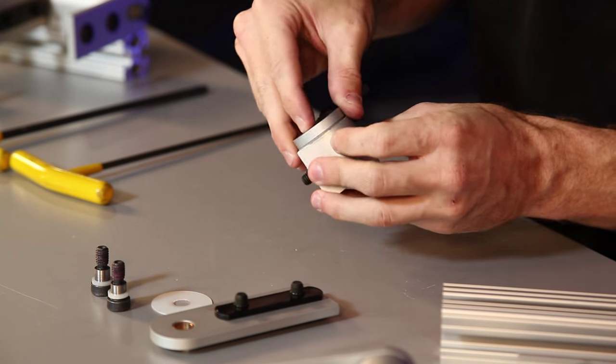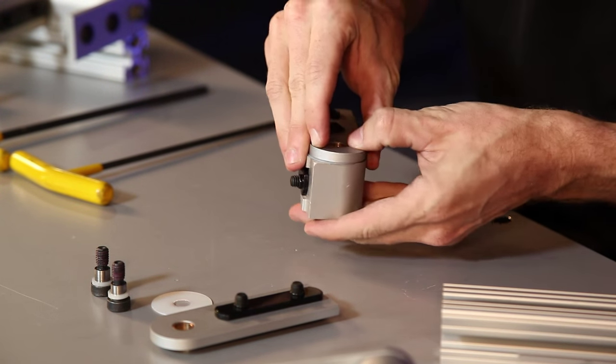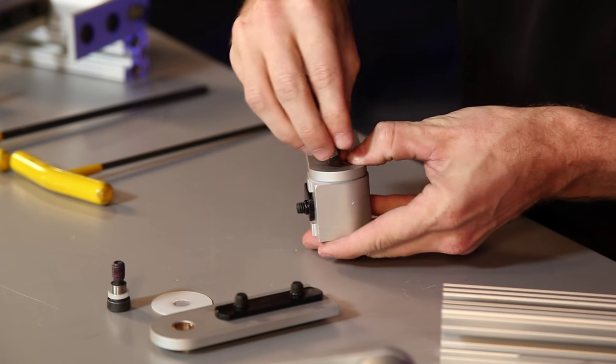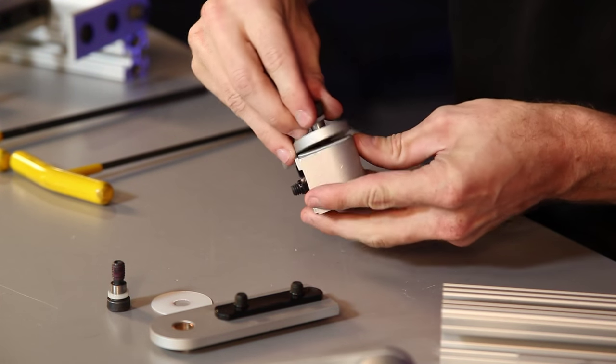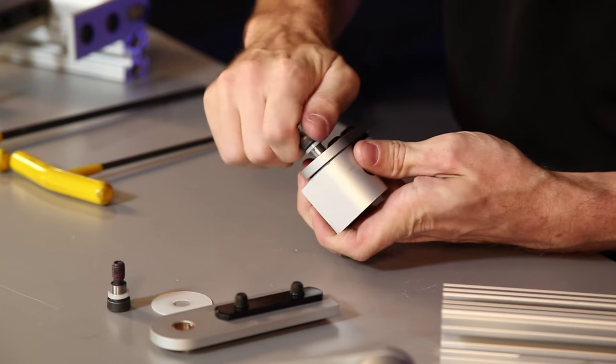Take our nub, and we'll line up that arm on the side of the nub. We'll take a bolt, feed it through, and we'll just hand tighten that down.